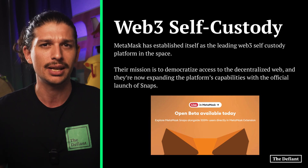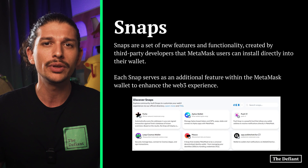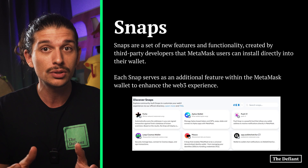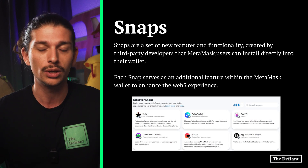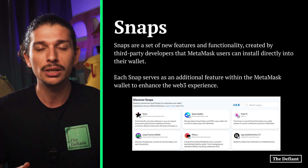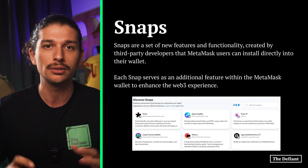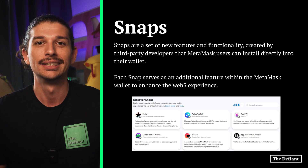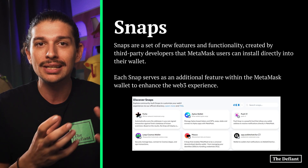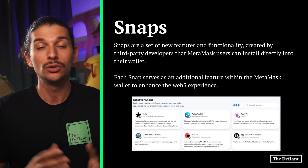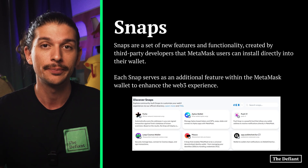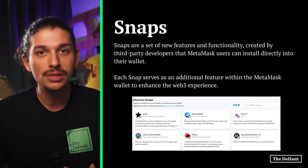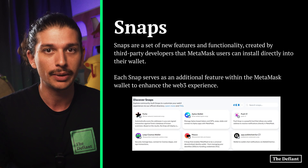But first, what exactly are snaps? They're a set of new features and functionalities created by third-party developers that MetaMask users can install directly into their wallets. Think of features like ad blockers, note-taking tools and translators that you might use on a day-to-day basis when navigating the internet. Similarly, each snap serves as an additional feature within the MetaMask wallet to enhance the Web3 experience. Users can decide which ones they want to install based on relevance and add specific functionalities to their wallet.